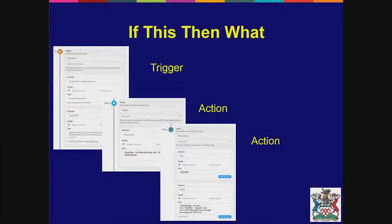Once you're in the If This Then That app itself, this is what you get: a trigger and an action — and another action. So the first action is Twitter, the second action is WordPress.